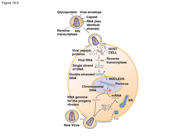Once incorporated into the genome, this is considered a provirus, and it can remain dormant for many years. Eventually it can become activated, and then messenger RNA is produced, and proteins are produced to create the capsomeres, which package up the reverse transcriptase and produce more viral particles. These are released from the cell, gaining the viral envelope as they exit — similar to exocytosis forming a vesicle-like structure — and then go on to infect more cells.